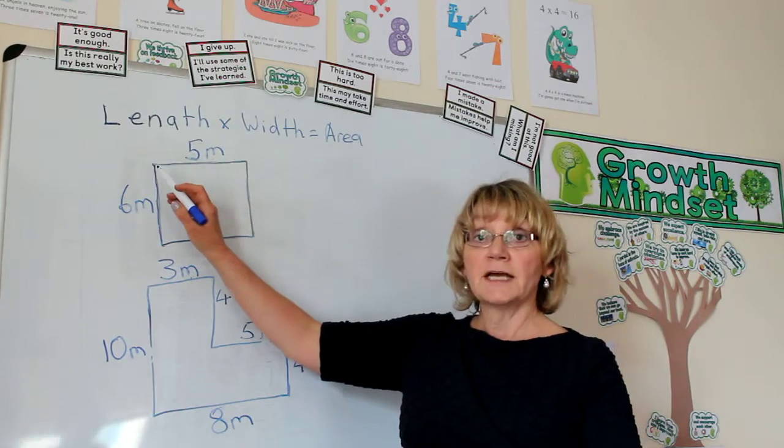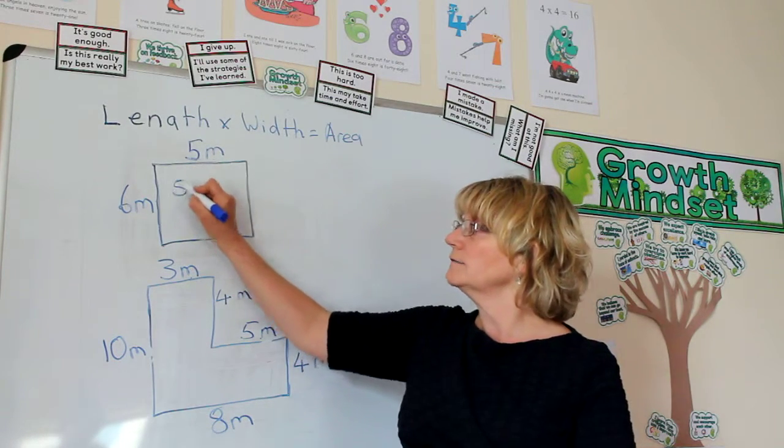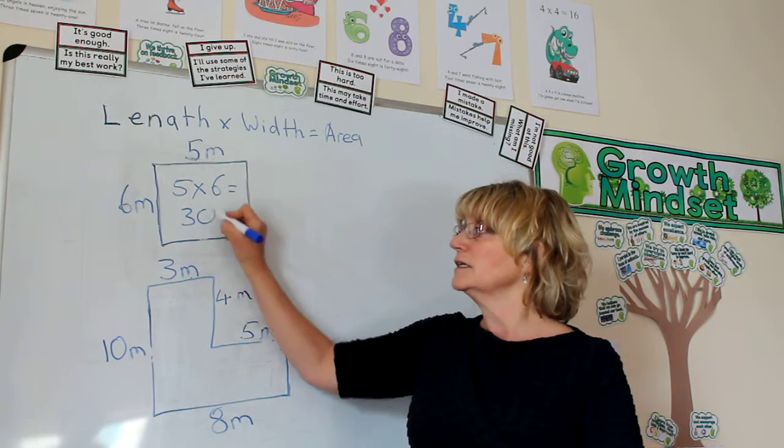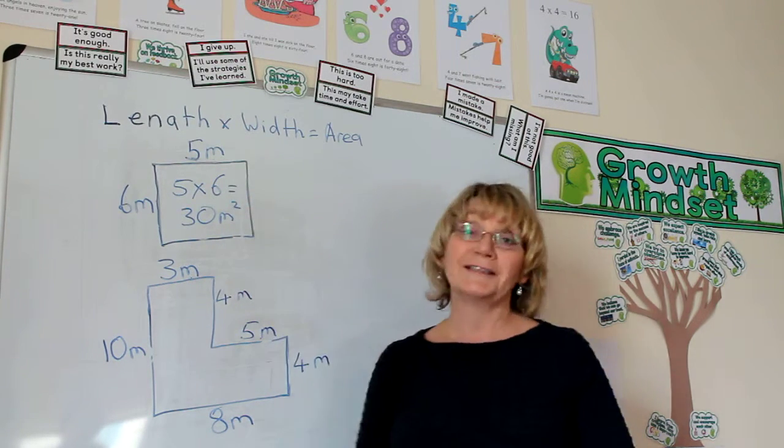So for this one, if we do length times width, the length is 5 and the width is 6. 5 times 6 is 30, and that would be metres squared. That's really easy, isn't it?